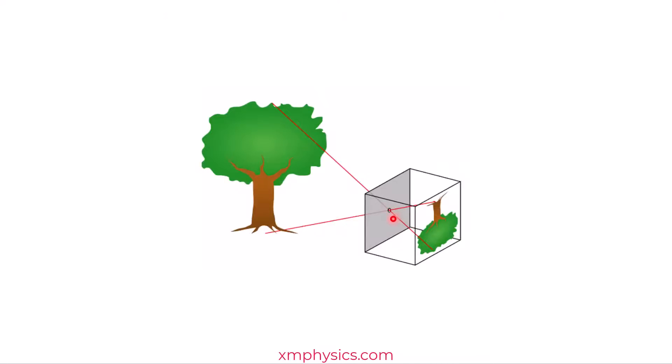Because light diffracts when it passes through an opening, and the smaller the hole, the wider it spreads. So even for a pinhole camera, you don't want the hole to be too small.